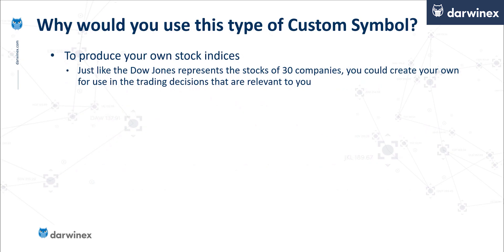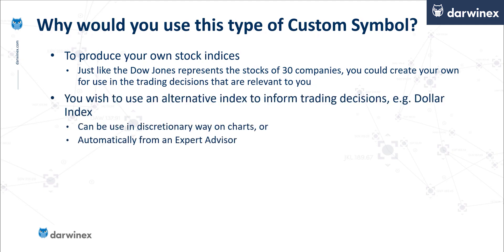So why would you create this kind of custom symbol? The first reason is because it allows you to create what are effectively your own stock indices. Just like the Dow Jones Industrial Average has 30 US companies as its individual components, you can create your own custom index that's relevant to you and gives you the information you need to make your trading decisions. Another reason is that there might be alternative indices, such as the dollar index, that you want to use to help inform your trading.